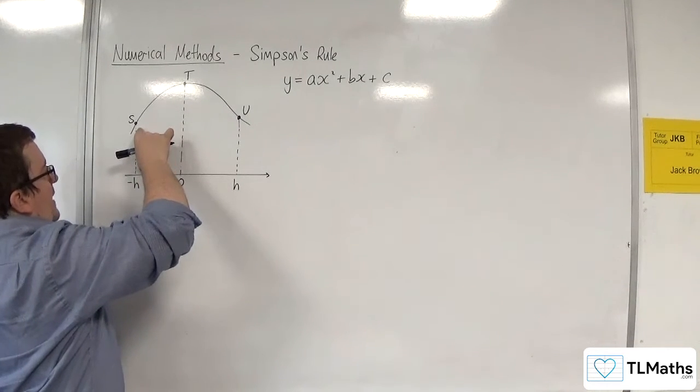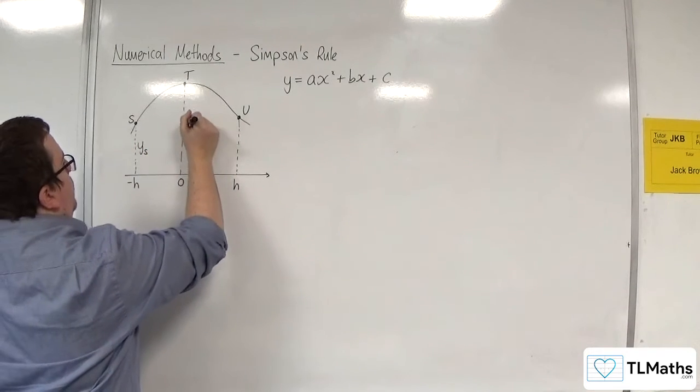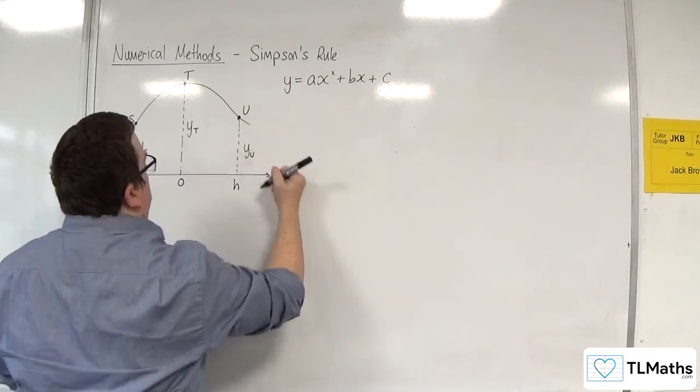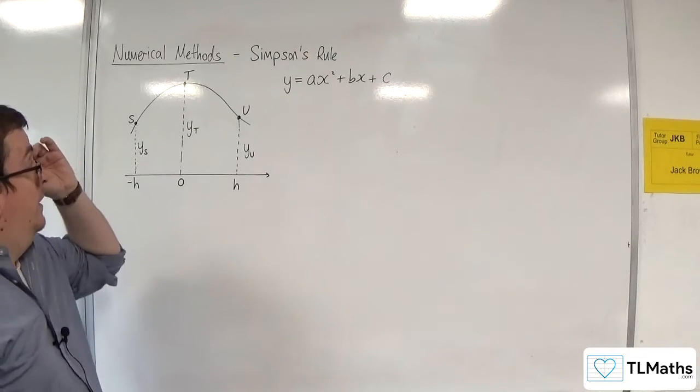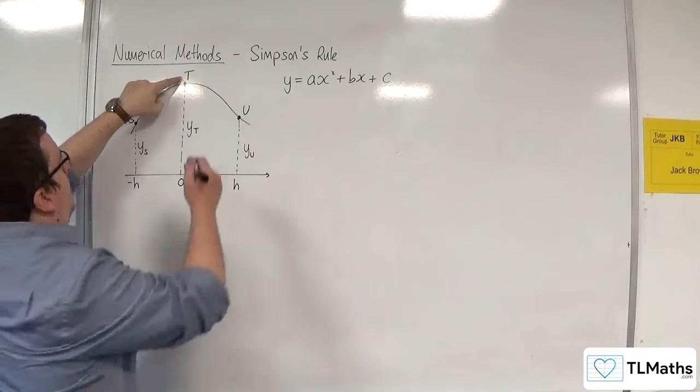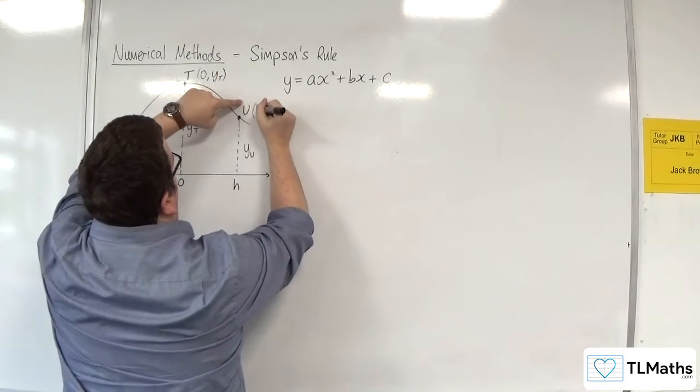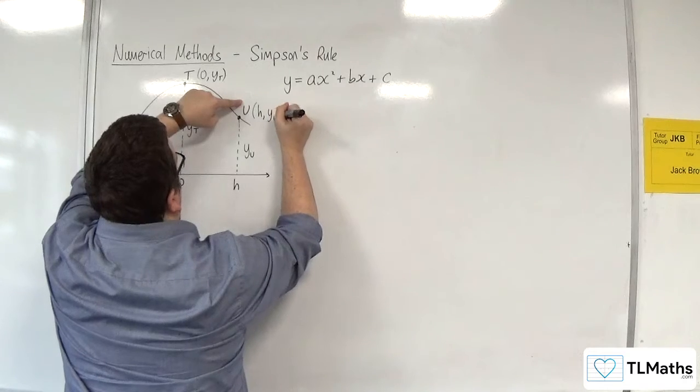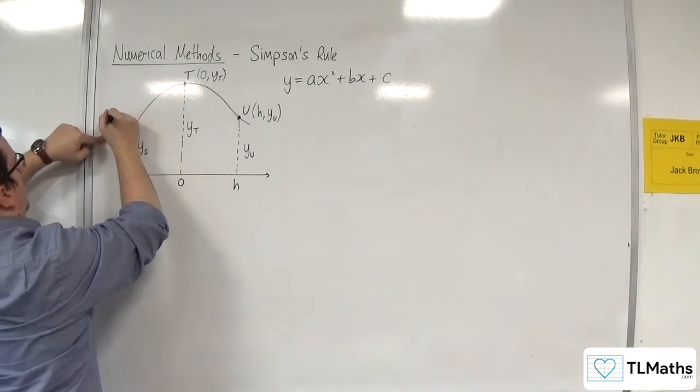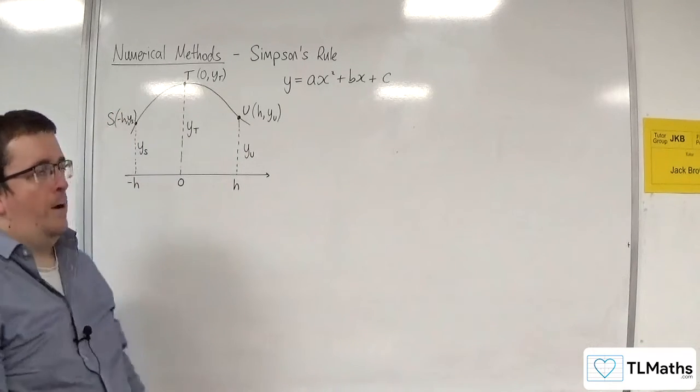This length here I will refer to as ys, this one as yt, and this one as yu. So that the coordinates of each of these points will be, that's (0, yt). This is (h, yu). And this one, let's write it over here, is (-h, ys).